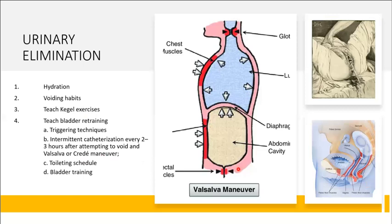Intermittent catheterization can be carried out every two to three hours, but only after the client has attempted to void. After catheterizing, measure the residual urine volume. If it's less than 150 mL, increase the catheterization interval — for example, from two to three hours to three to four hours, or four to six hours. You don't want to go more than eight hours without catheterizing. The less urine obtained, the longer the interval increment.